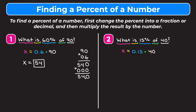So we get X equals 0.15 times 40. Now we do that multiplication: 0 times 5 is 0, 0 times 1 is 0, 0 times 0 is 0. On the second line we put a 0 to start, 4 times 5 is 20 — put the 0 down and carry the 2 — 4 times 1 is 4 plus 2 is 6, 4 times 0 is 0. Adding those two lines we get 0600. In our original numbers we have a total of two digits to the right of our decimal points, so we want two digits to the right in our answer, giving us 6.